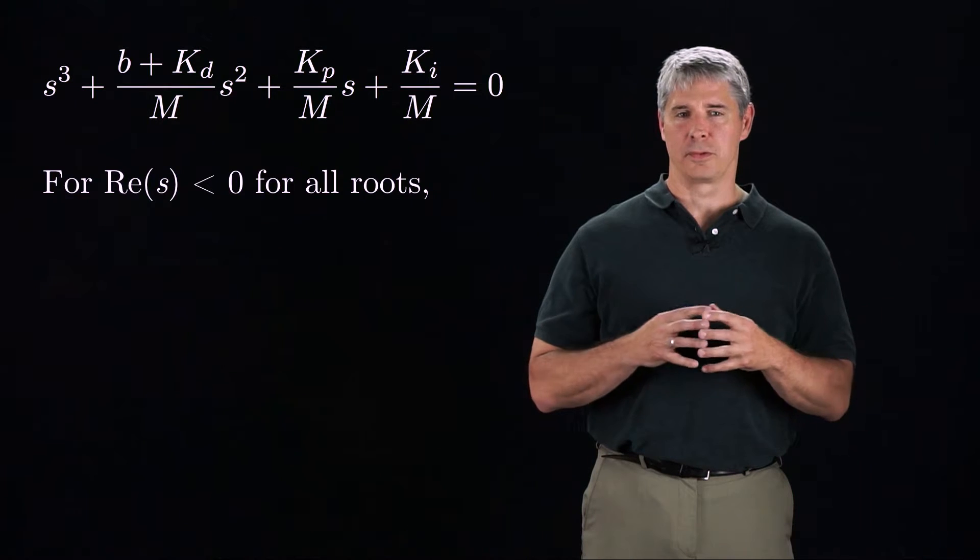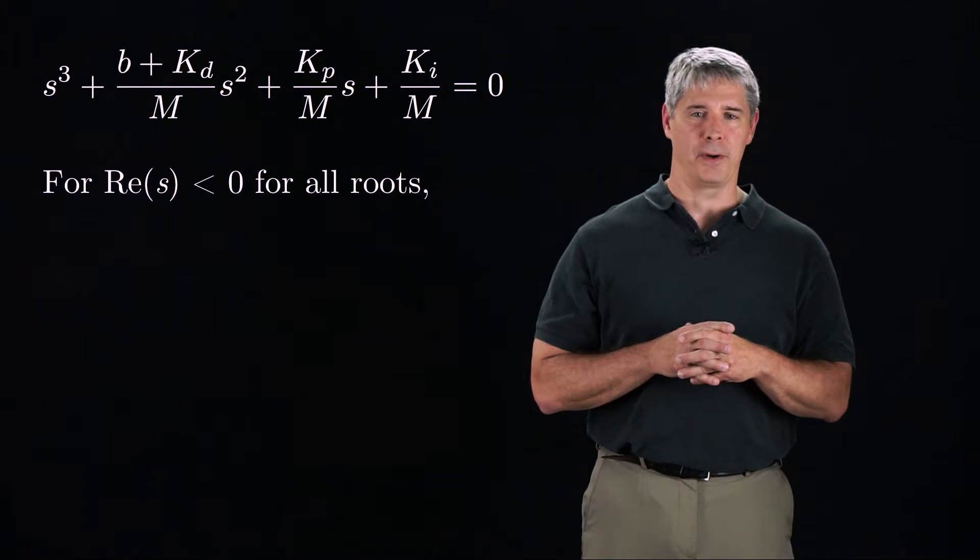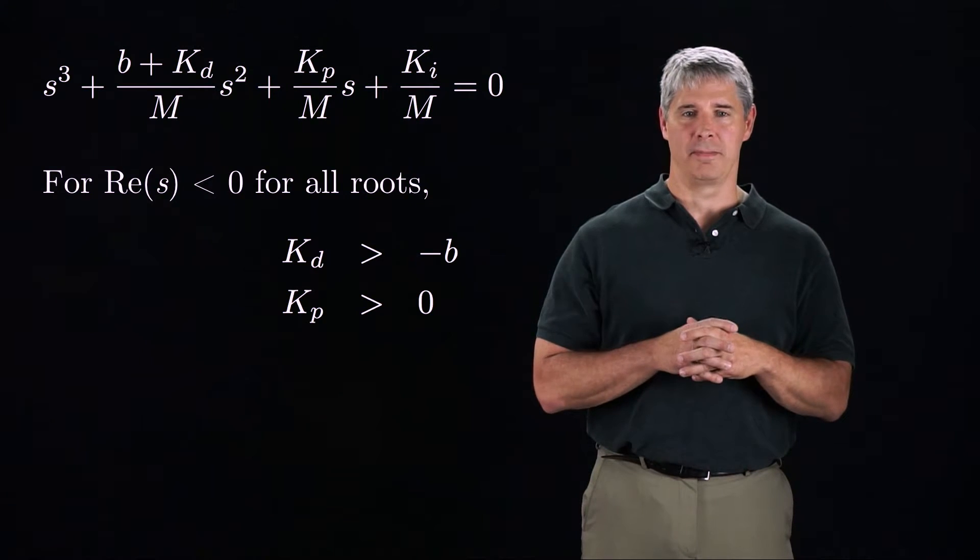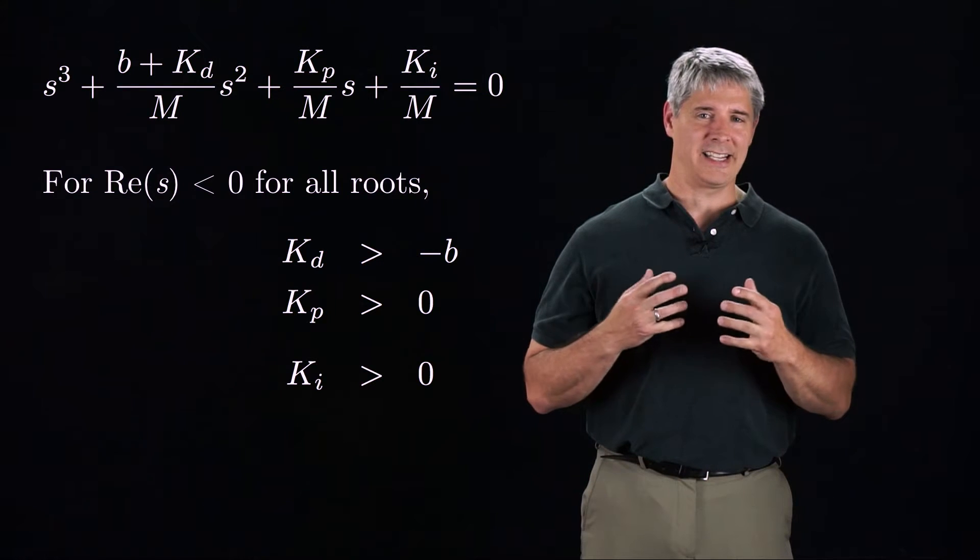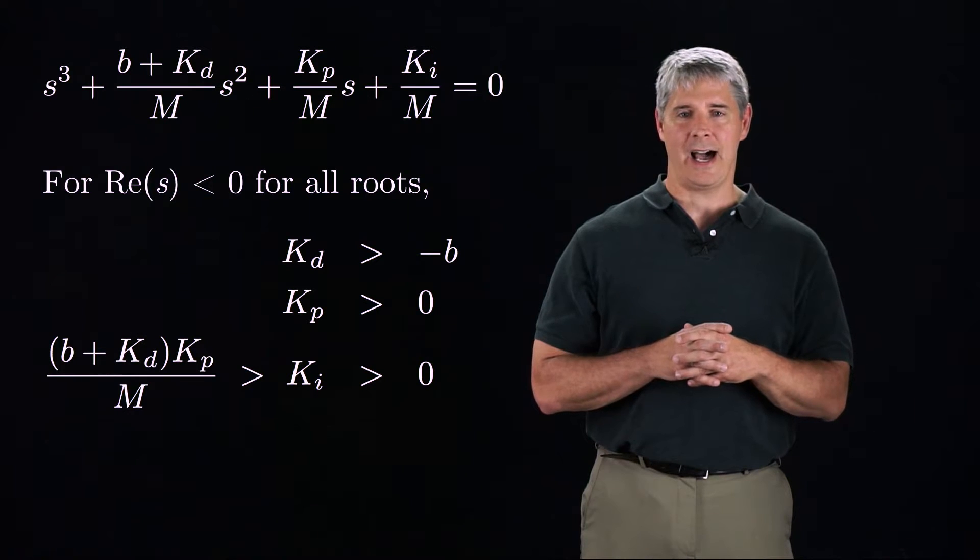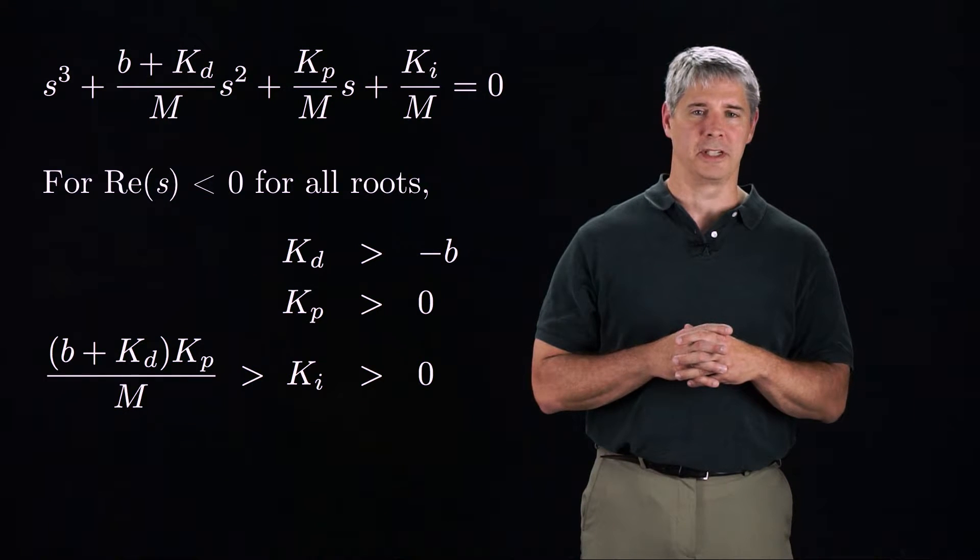For stability, the roots must all have a negative real component. As for the PD controller, KD must be greater than minus B, and KP must be greater than zero. The gain KI must also be greater than zero, but unlike KP and KD, KI also has an upper bound for stability.